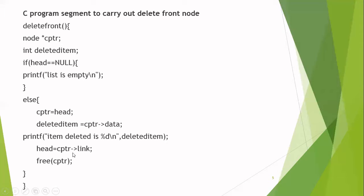Suppose if there are no nodes next to the first node — that means the linked list contains only one node — then the link part of the first node will have the value null. When you copy the null value to header, it indicates the list is empty after performing deletion. After deleting the first node, which is the only node in the linked list, the list becomes empty. This is clearly indicated by assigning a null value to header, so that case is also satisfied.